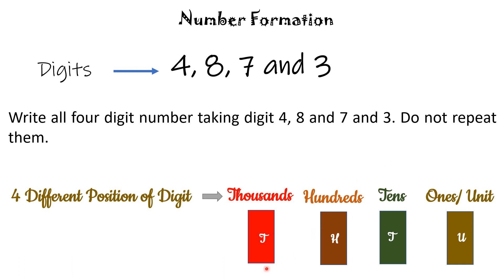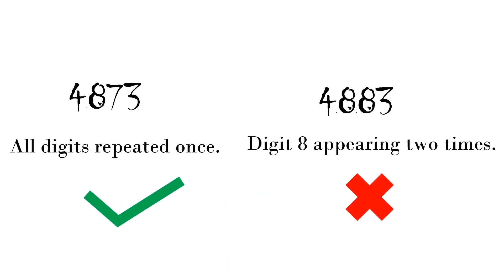आपको four different places fill करने होंगे किसी suitable digit से, जिससे हमें सबसे बड़ा और सबसे छोटा नंबर मिल जाएगा. हमें digit को repeat नहीं करना है. इस condition में number 4873 allowed होगा, बट 4883 allowed नहीं होगा, क्योंकि यहां पर 8 दो बार है. Digit को केवल एक बार ही यूज़ करना है.